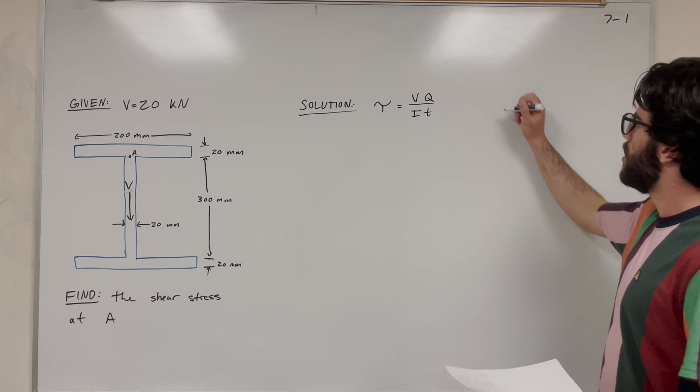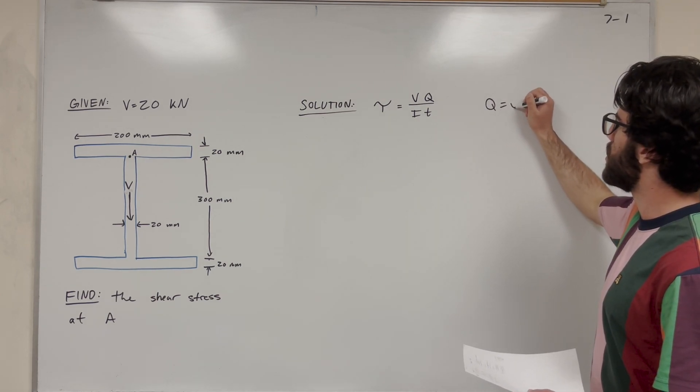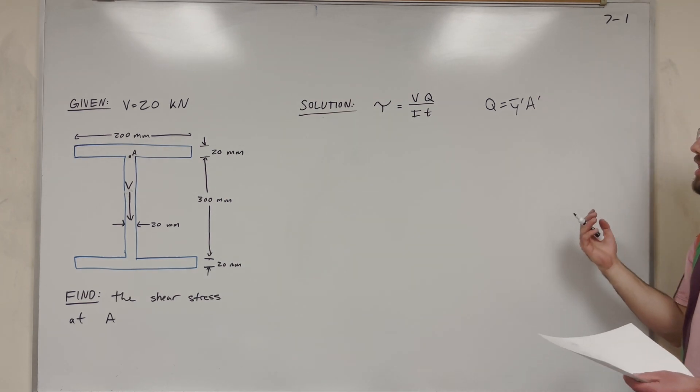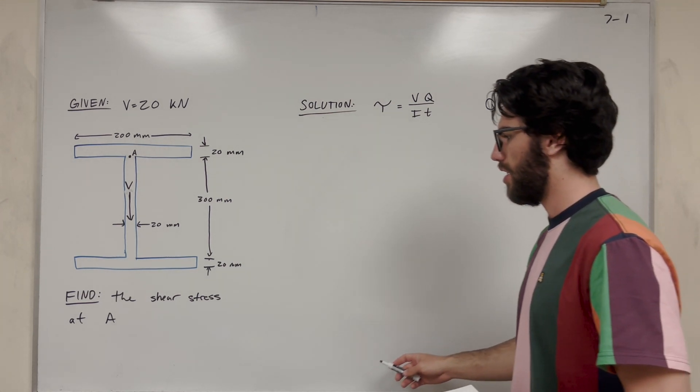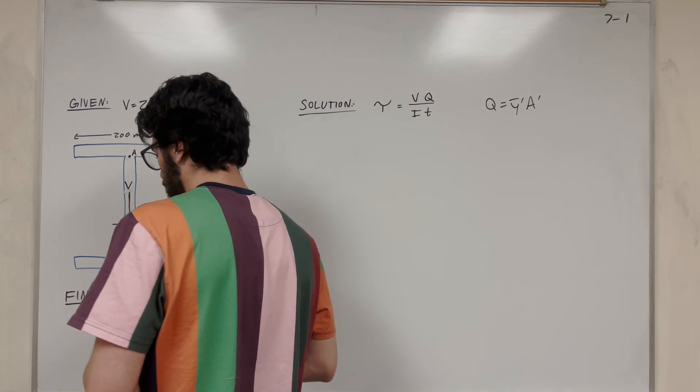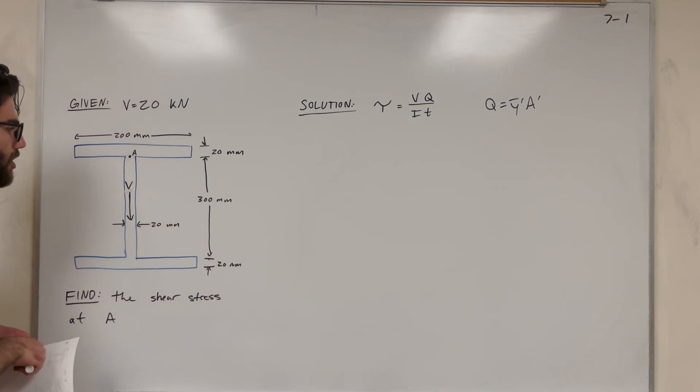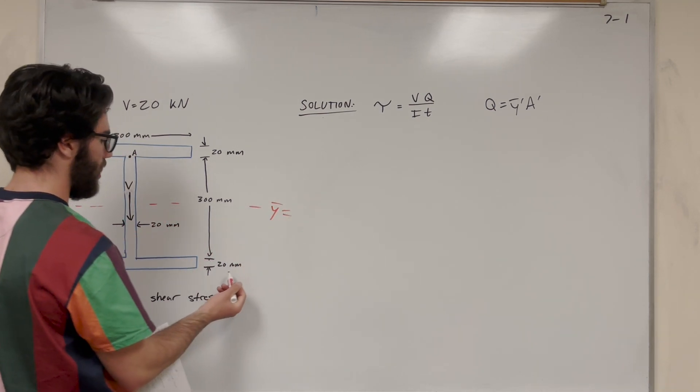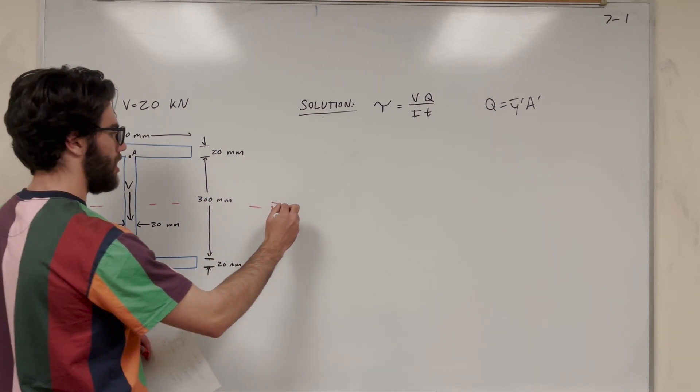And then we have Q. So what is Q? Well, Q is Y bar prime times area. And so what we do here is we're going to take our center. First of all, let's find out where our center of mass is. This shape is symmetrical, so it's going to be pretty easy to tell that our Y bar is going to cut it right in half. Y bar is equal to 20 plus half of 300, which is going to be 170.